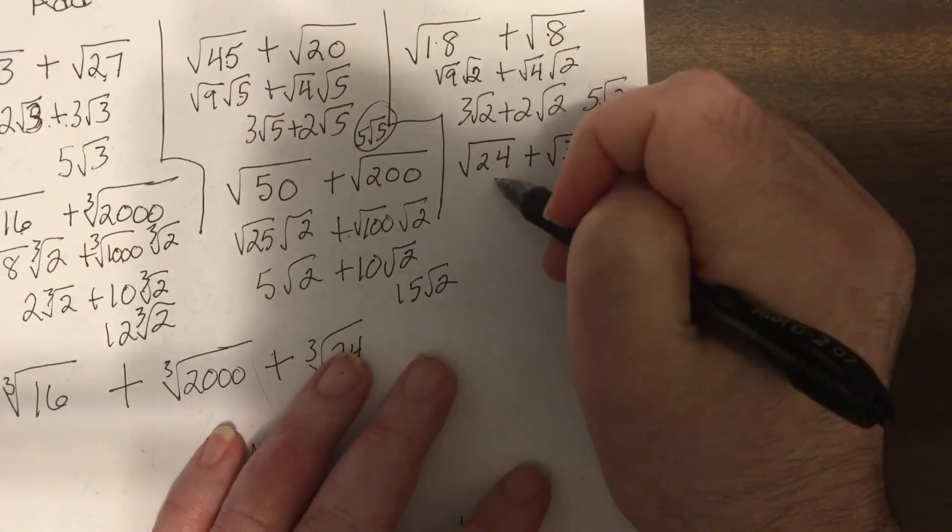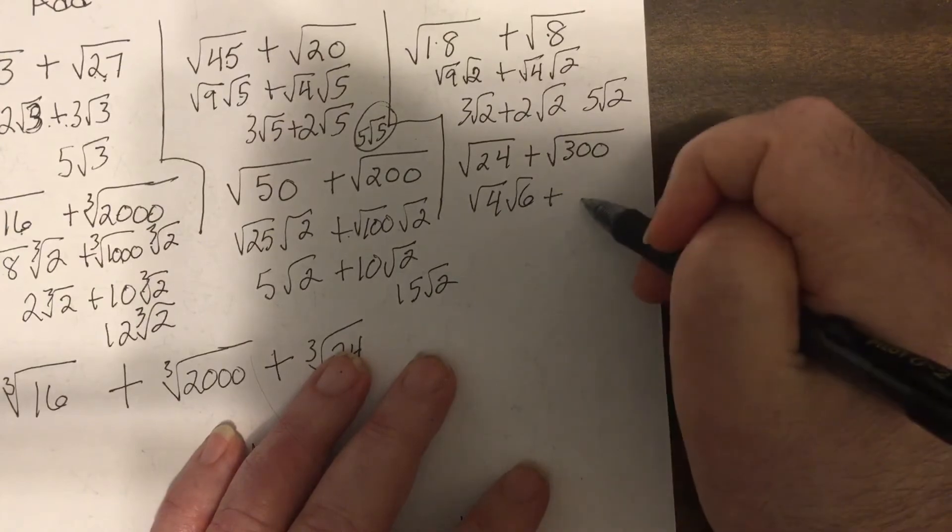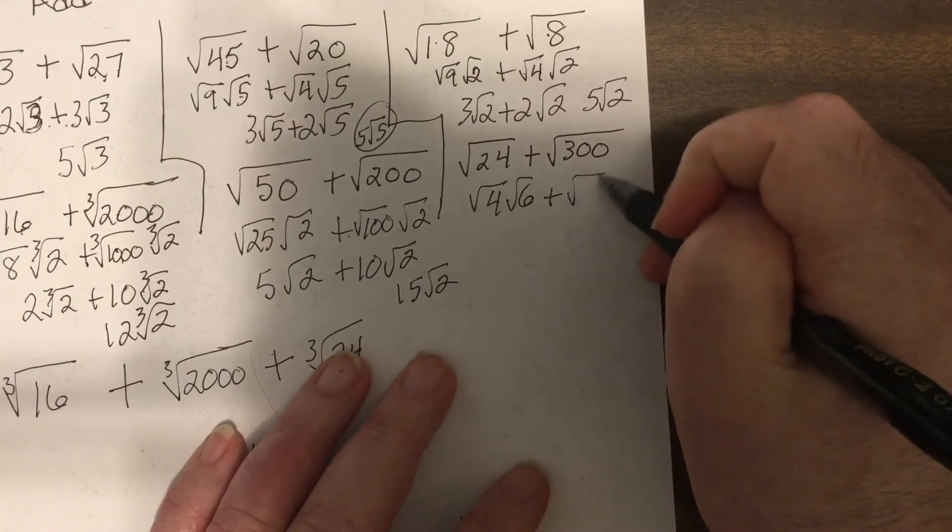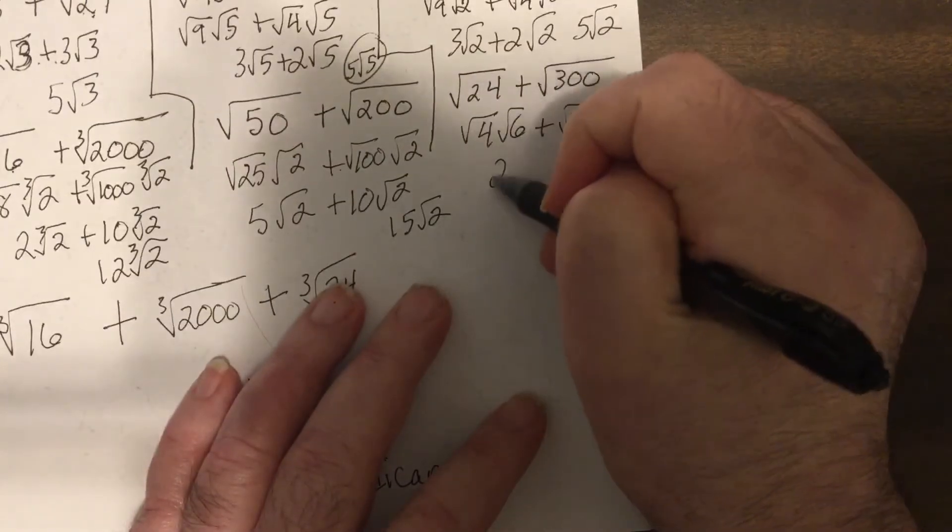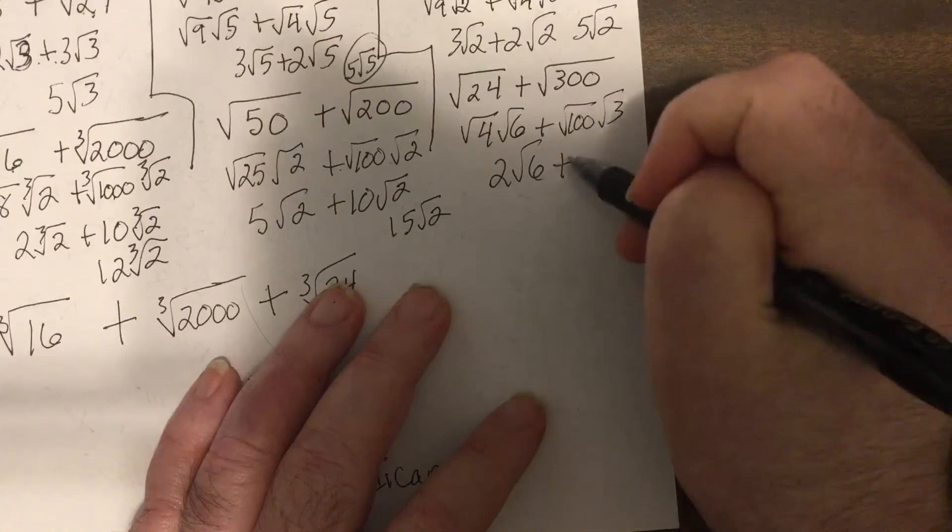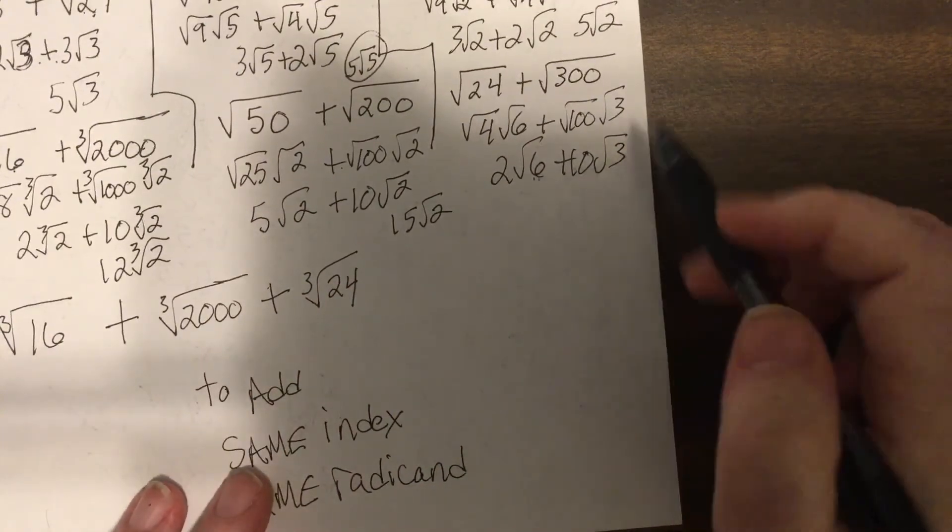This one, how about four and six? Four is a perfect square. And, let's go 100. So this would be two square root of six plus 10 square root of three. Cannot combine it because I have different radicands.